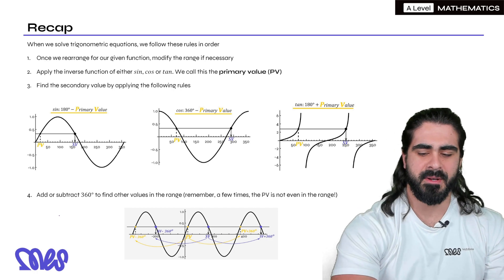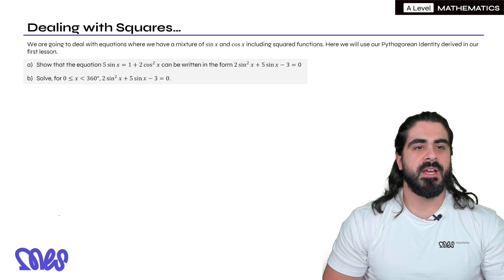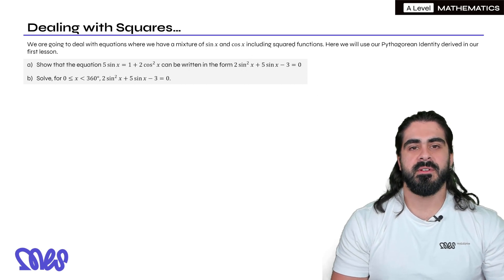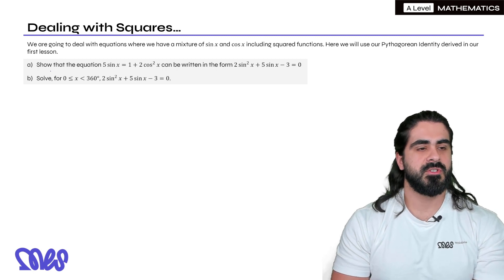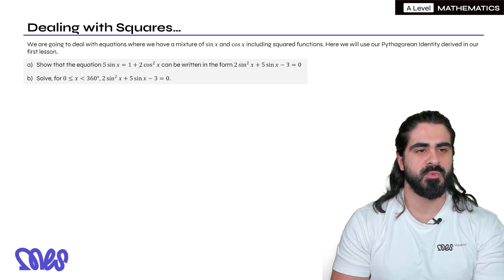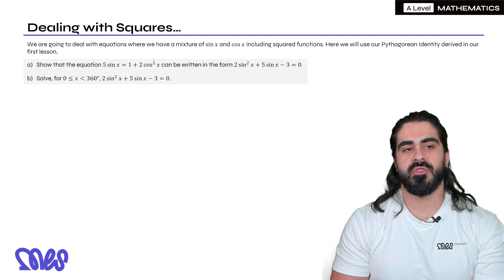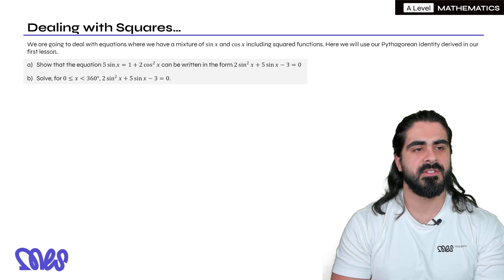Let me show you how we apply it to questions involving squares. We're going to deal with equations where we have a mixture of sine and cos being squared. Here we'll use our Pythagorean identity derived in our first trigonometry lesson. The first question: show that the equation 5 sine x equals 1 plus 2 cos squared x can be written in this form. When we solve trig in general, we obviously want to make sure it's all in terms of one function. We notice here that we have a sine x and a cos squared x.